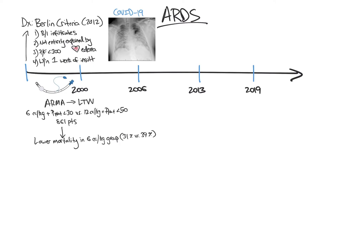Lower mortality in the 6 cc per kilogram group is primarily attributed to protecting the lungs from excessive stretch, known as volutrauma. In addition, patients who received low tidal volume ventilation also required slightly higher PEEP, suggesting that prevention of atelectasis and avoidance of atelectotrauma is also beneficial. To recap, ARMA provides evidence for low tidal volume ventilation in ARDS, which is associated with decreased mortality.